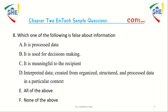Question number 8: Which one of the following is false about information? A) It processes data, B) It is used for decision making, C) It is meaningful to the receivers, D) Interpreted data created from organized structure and processed data in a particular context. Answer: E) All of the above, F) None of the above.